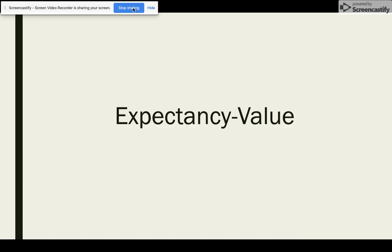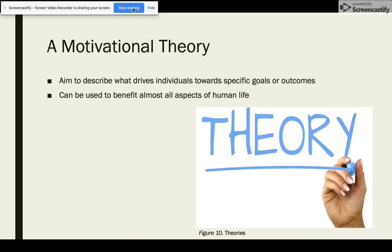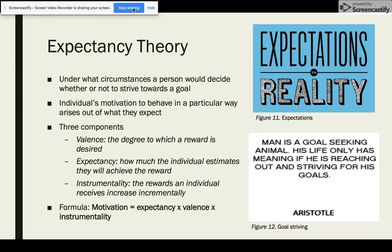Now let's move to Expectancy Value Theory. Theories in the field of motivational research aim to describe what drives individuals to work towards specific goals or outcomes. Theories that help break down and explain the components of different motivational processes can be used to benefit almost all aspects of human life. The theory of expectancy proposed that an individual's motivation to behave in a certain way arose out of what they expected the outcome of that specific behavior to be.